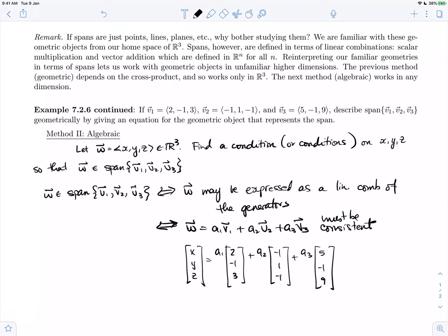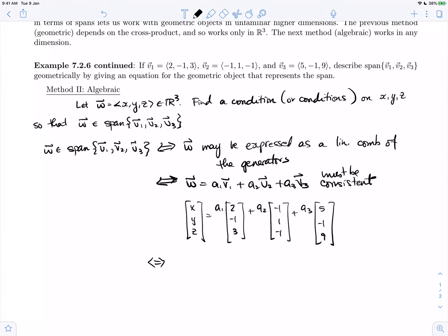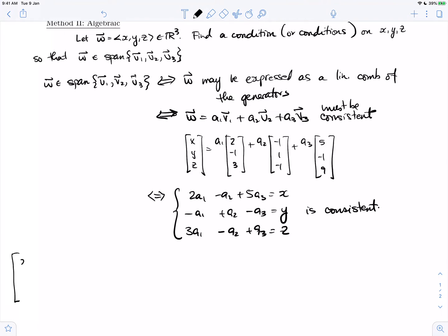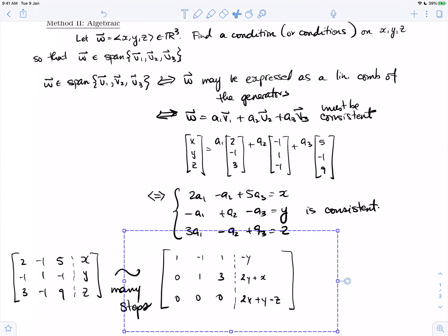This vector equation is consistent if and only if the equivalent linear system is also consistent. So 2a1 minus a2 plus 5a3 is x, minus a1 plus a2 minus a3 is y, and 3a1 minus a2 plus 9a3 is z. This must also be consistent, but we know how to determine the consistency of a linear system. We can put it into an augmented matrix, reduce that matrix to one of its echelon forms, and examine the form for consistency of the linear system. So after many steps, we would get to an echelon form that I prepared for us.